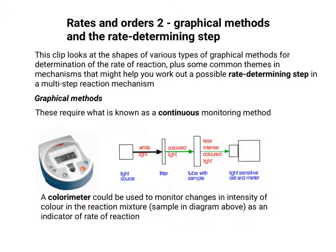Another technique that could be used is colorimetry, where a colorimeter could be used to monitor changes in intensity of a color in the reaction mixture, and this could be used as an indicator of the rate of reaction.